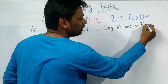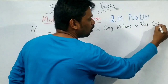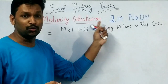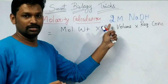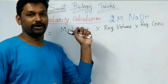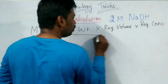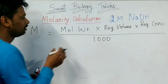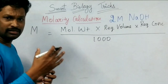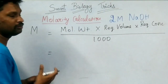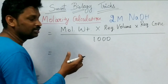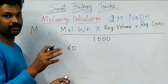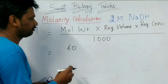We also need another important value: the required concentration. Required concentration means if you have been asked to prepare 2 molar, this is the concentration. In case it is 2.5, you put the 2.5 value. This whole value should be divided by 1000. The molecular weight of sodium hydroxide is 40 — exactly 39.99, but it is considered as 40.